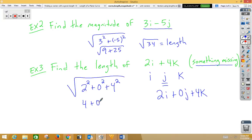So four plus nothing plus sixteen, square root of twenty, you're going to want to reduce that to two root five, and that would be the magnitude of our vector.